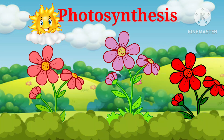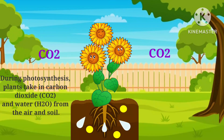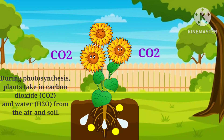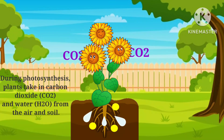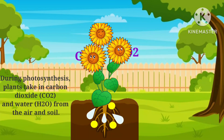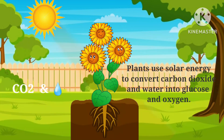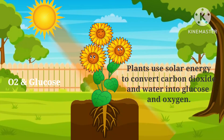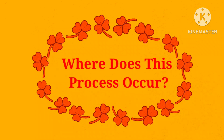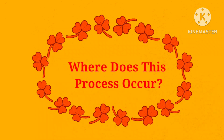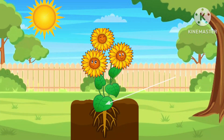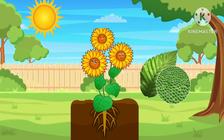During photosynthesis, plants take in carbon dioxide, water, and nutrients from the air and soil, and use sunlight to convert water and carbon dioxide into oxygen and glucose. Photosynthesis occurs in the leaves of the plant. Leaves have small pores called stomata.